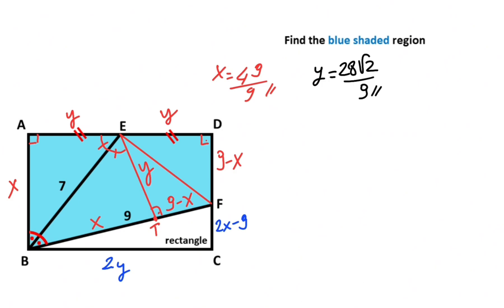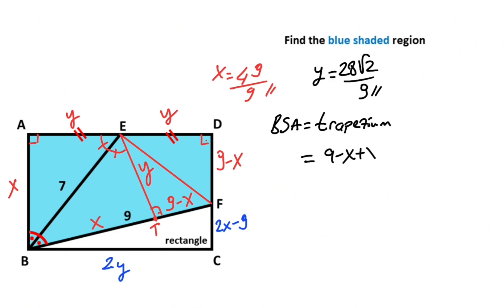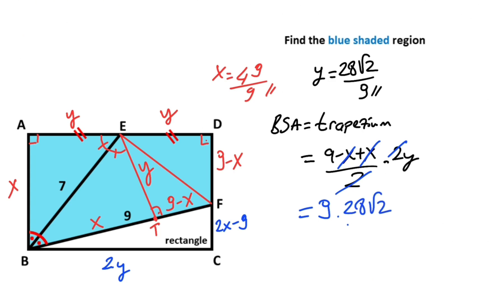Now we can calculate the area of the blue shaded region. The blue shaded region is also equal to the area of a trapezium. The trapezium area formula is (base 1 + base 2) / 2 × height. So: (9 − x + x) / 2 × 2y. The x terms cancel, giving blue shaded area = 9y. Since y = 28 root 2 over 9, the blue shaded area equals 28 root 2 units squared.